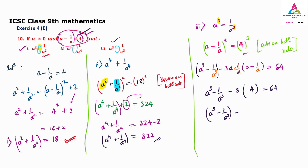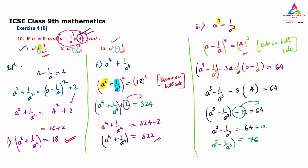So we have a cube minus 1 by a cube minus 12 equals 64. Shifting minus 12 to the right side: a cube minus 1 by a cube equals 64 plus 12, which is 76. So the third and final answer is 76.